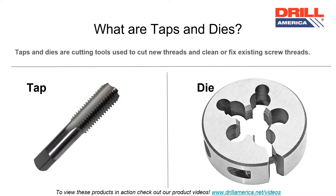What are taps and dies? Taps and dies are cutting tools used to cut new threads or clean existing screw threads. Taps cut new threads or clean existing screw threads inside of a hole. Dies cut new threads or clean existing screw threads on a rod or other workpiece.